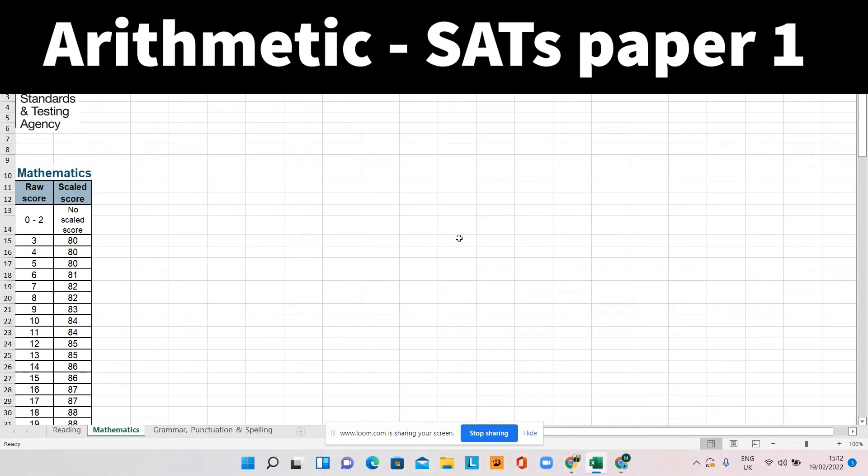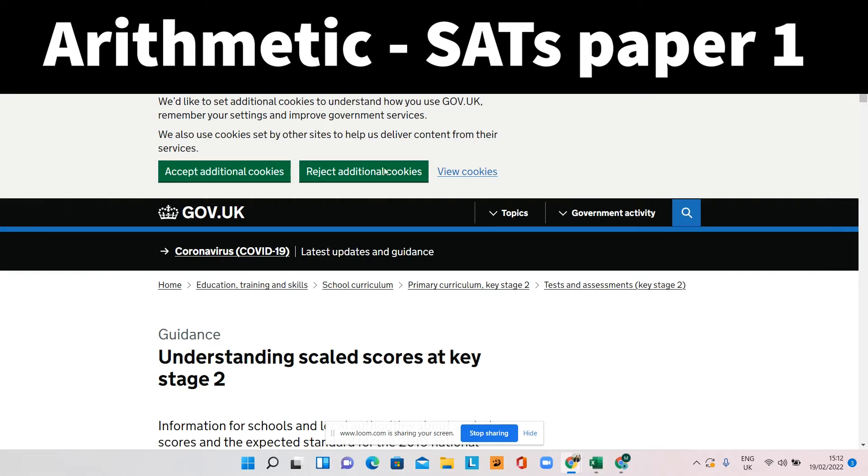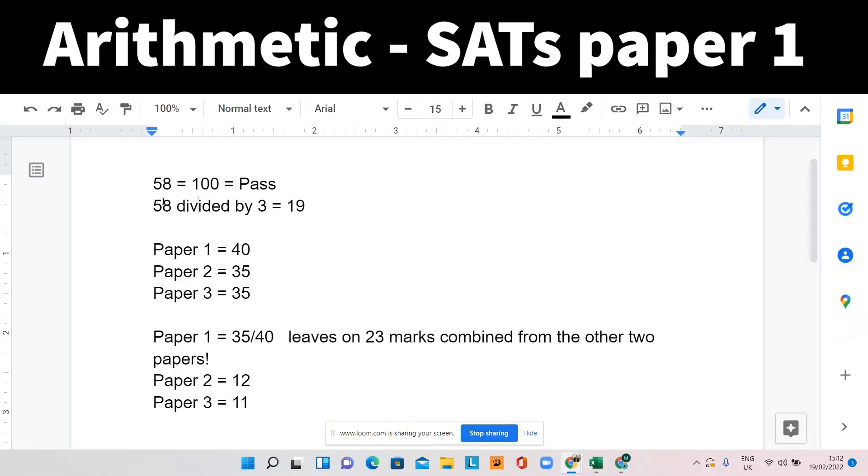Now, why is that so important? Well, because if I just go back to this document, if you imagine they need 58 over three papers, if you divide that equally by three, it works out about 19 marks per paper, just above that actually. But like I said before, some of the papers are easier than others.